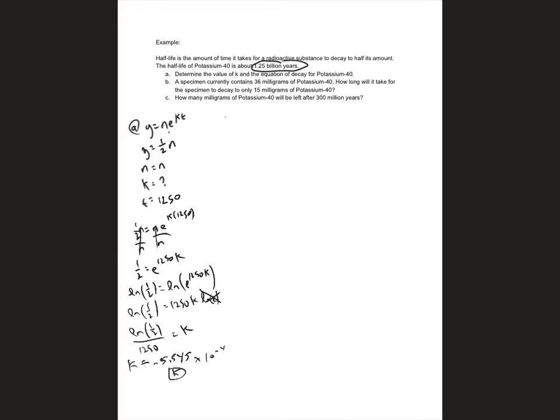Part B says we have a specimen that contains 36 milligrams of this isotope. How long will it take to decay to only 15 milligrams? So it's the same isotope. So it's going to have the same relative growth rate, the same k. So I'm going to use the same formula.